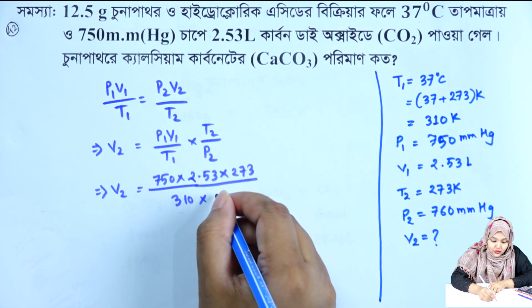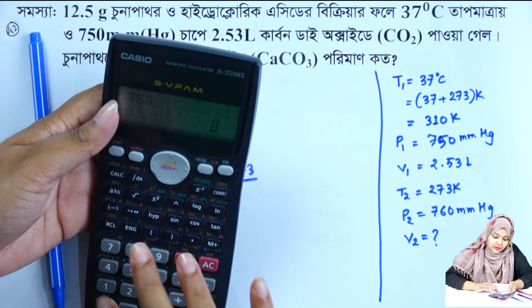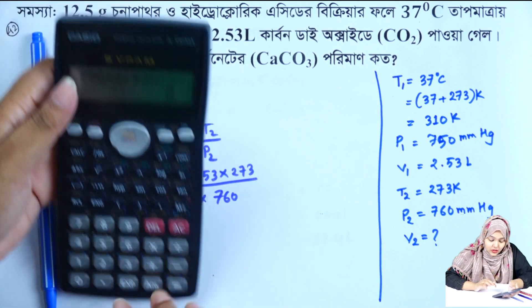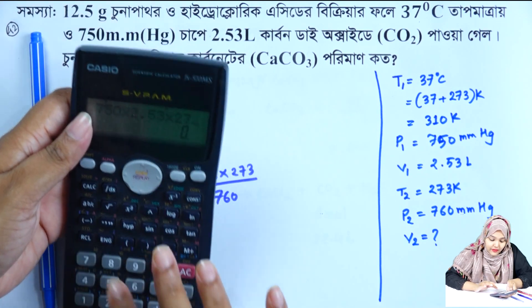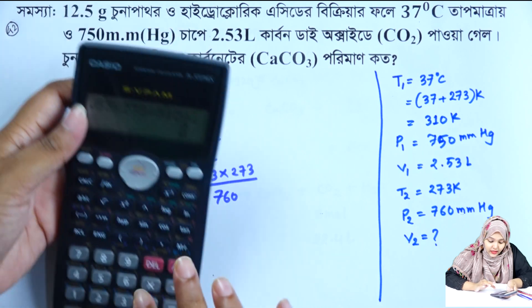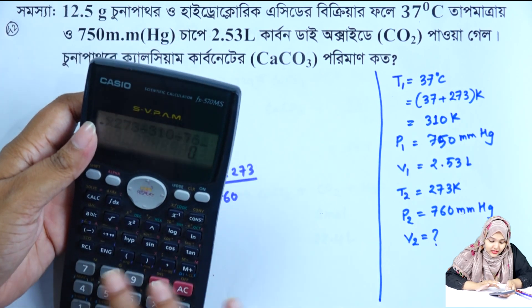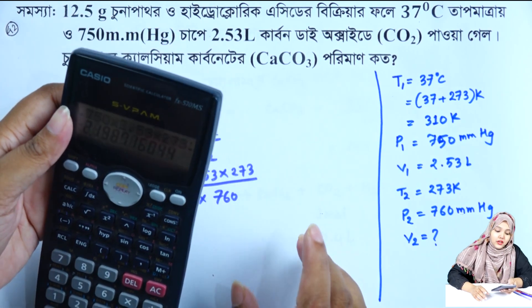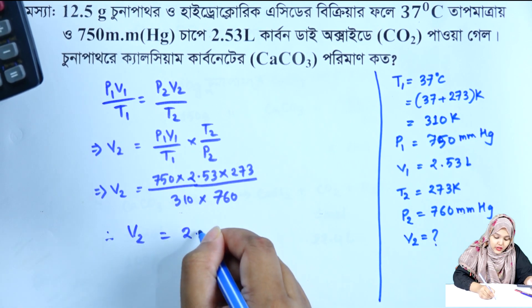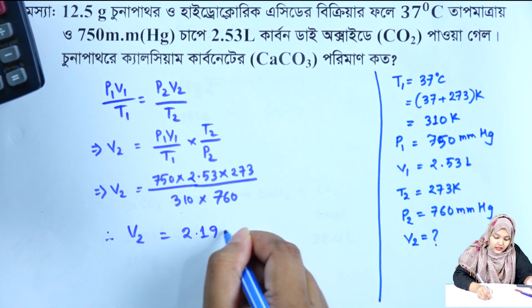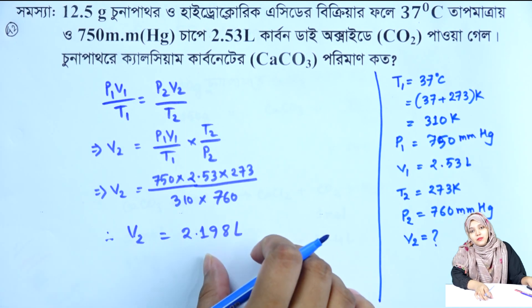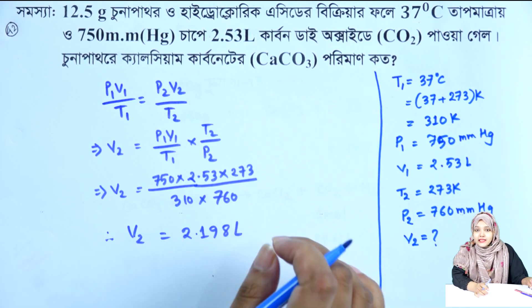P2 is equal to 760. So: 750 multiplied by 2.53 multiplied by 273, divided by 310, divided by 760 is equal to 2.198. Therefore, V2 is equal to 2.198 L.